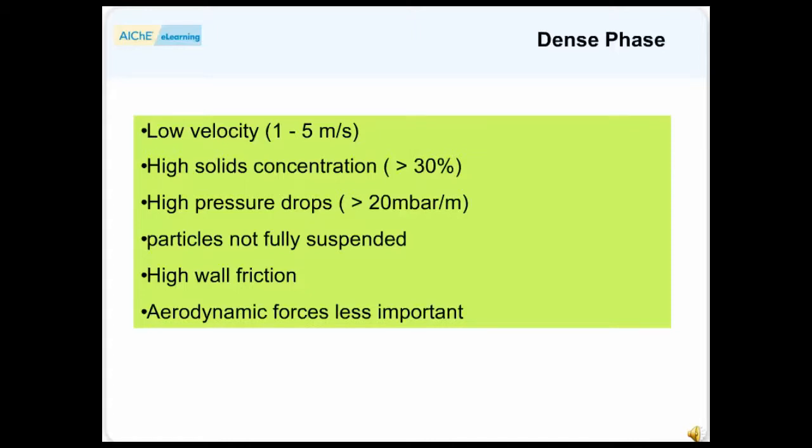And high pressure drops per unit length of the pipe, typically greater than 20 millibars per meter. In dense phase transport, particles are not fully suspended, and there is much interaction between the particles.